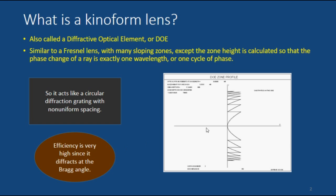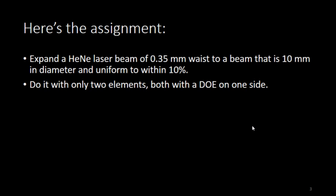And I have to mention that this picture is greatly expanded because the height of these zones is actually measured in millionths of an inch. You wouldn't be able to see it with your eye if I didn't blow it way up. Okay, here's the assignment. We're going to expand a helium neon laser beam, 0.35 millimeter waist, to a beam that's 10 millimeters diameter, and try to make it uniform. And we're going to do this with two elements. Each one has a DOE on one side.